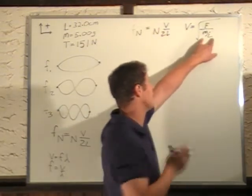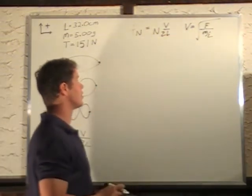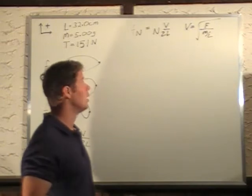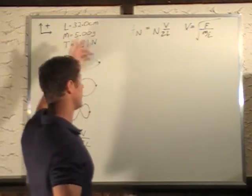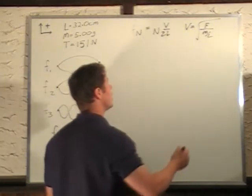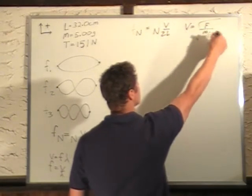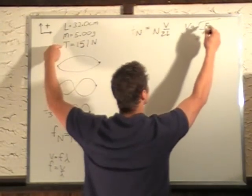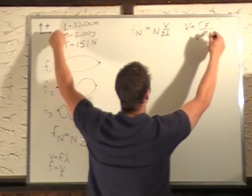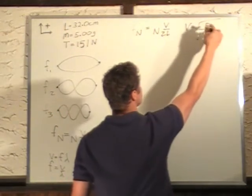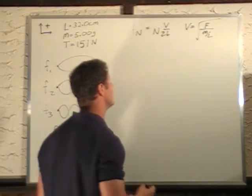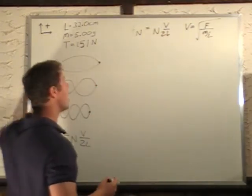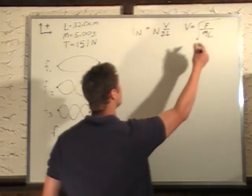So, sometimes they'll give you this value as a certain amount of kilograms per meter. In this case, we're just giving the mass and the length, so we have to compute it ourselves. So, this v, the velocity, is the force, which is this tension here, mass, and the length. So, we can plug those in here to get our velocity of the wave, and then we can plug that in here.